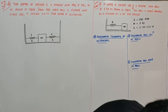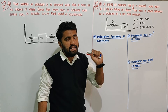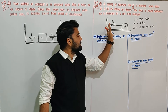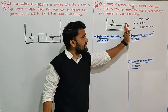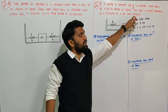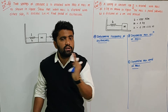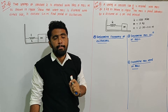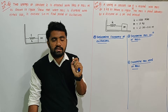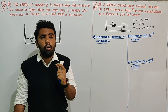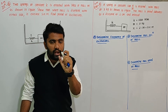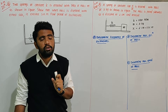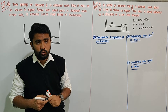We have 3 questions to solve. The first is frequency of oscillation. If the spring-mass system is displaced and released, the block will oscillate. We need to find frequency F. The angular frequency ω for simple harmonic motion has the equation: ω = √(K/M).